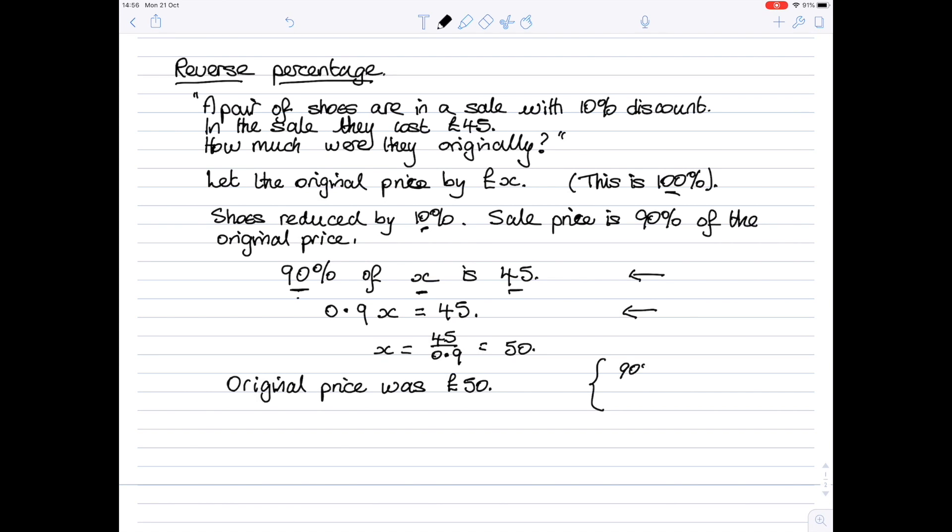Now I'll show you why 90% becomes 0.9. So 90% means 90 out of 100. The zeros will cancel. 90 out of 100 is 9 tenths, and 9 tenths as a decimal is 0.9.